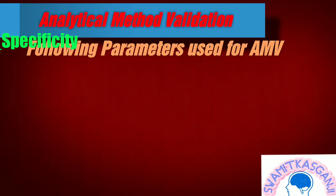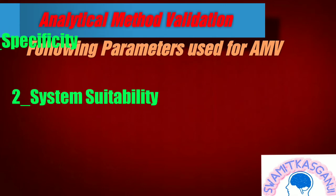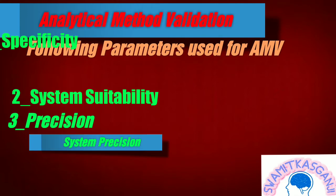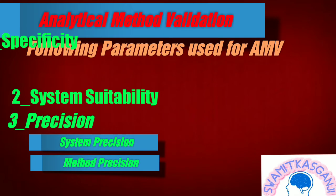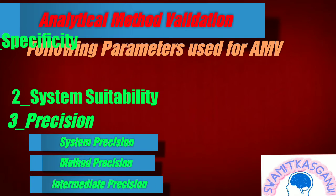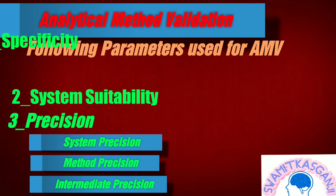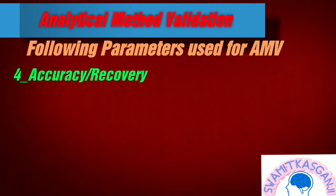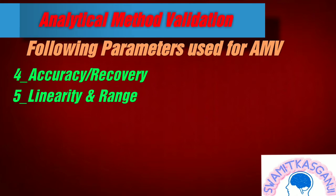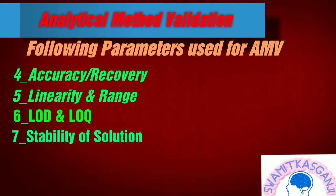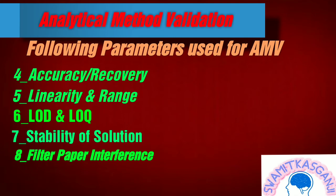The following parameters are used for analytical method validation: specificity, system suitability, precision — including system precision, method precision, and intermediate precision — accuracy and recovery, linearity and range, LOD and LOQ, stability of solution, and filter paper interference.